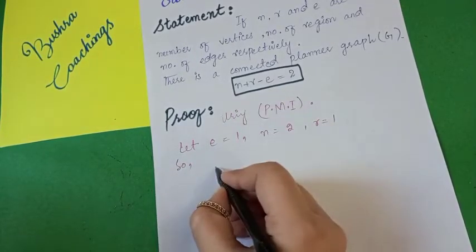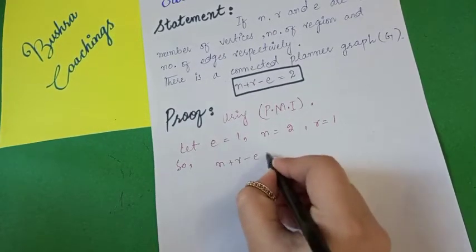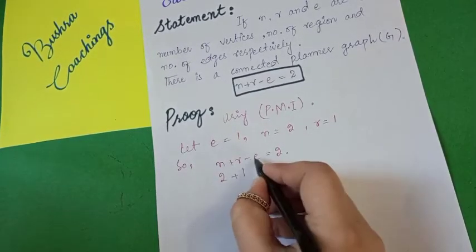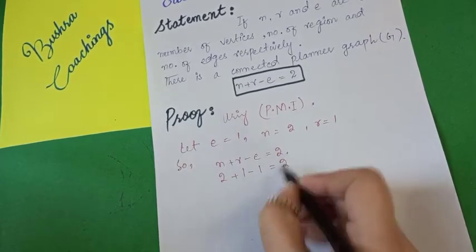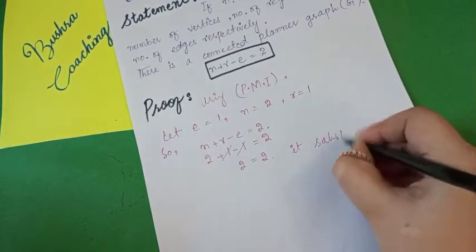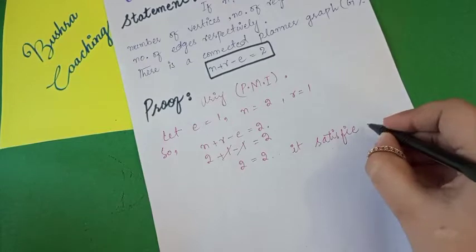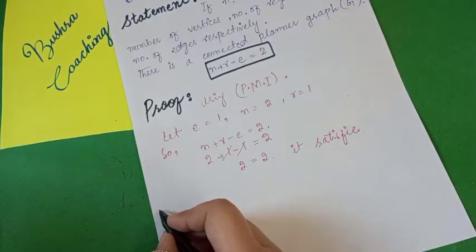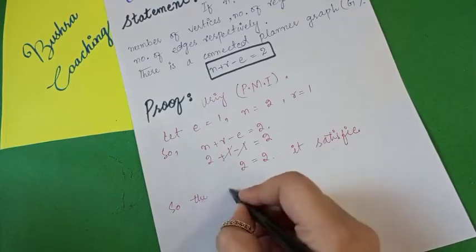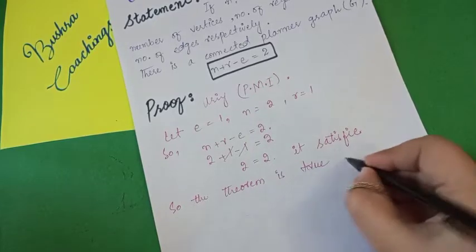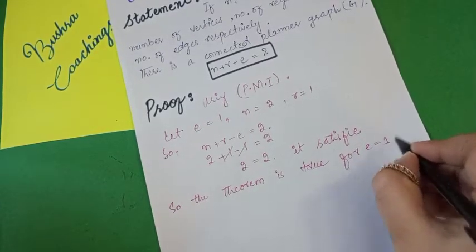Putting the values into N plus R minus E equals 2: we get 2 plus 1 minus 1, and here minus 1 and plus 1 cancel. So 2 equals 2 — it is satisfied. The theorem is therefore true for E equals 1.